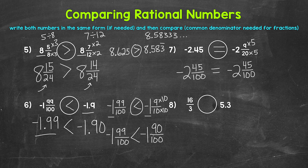Let's also confirm in decimal form. Negative two and 45 hundredths versus negative two and nine-twentieths: nine divided by twenty gives us 0.45. So that's negative 2.45 as well. We can see that both decimals are equal, confirming that negative two and 45 hundredths is equal to negative two and nine-twentieths.